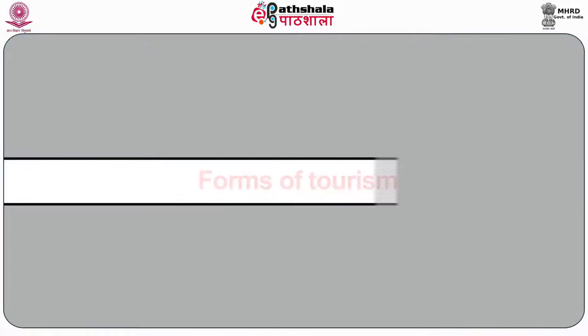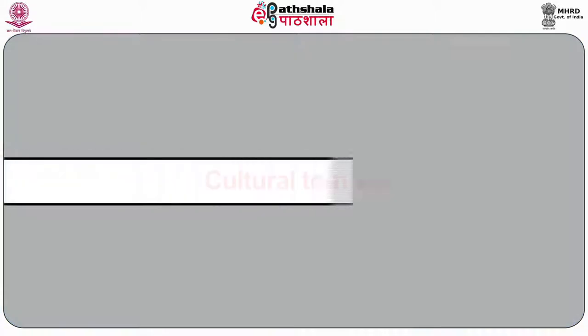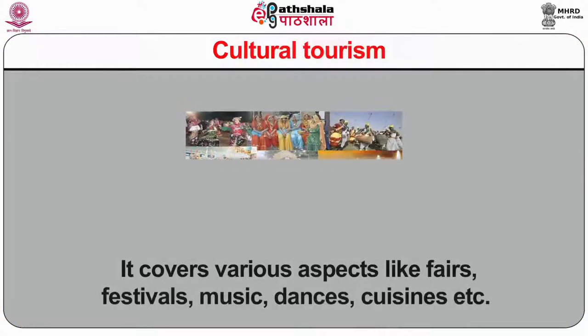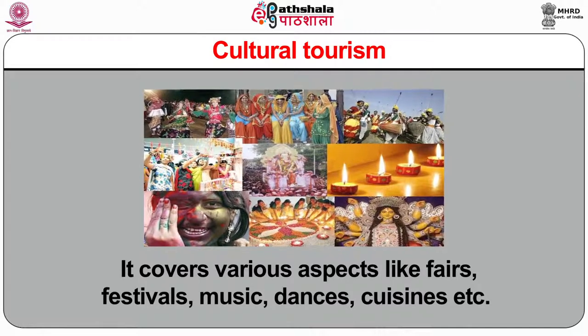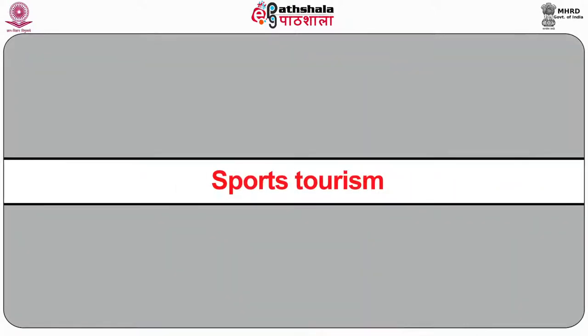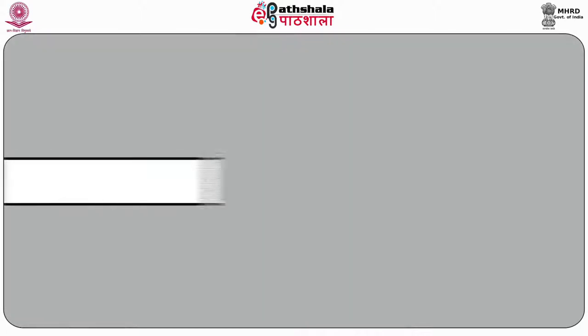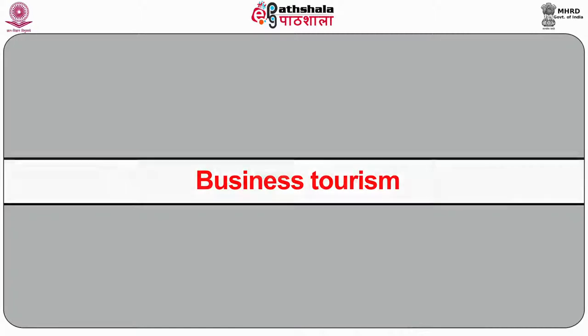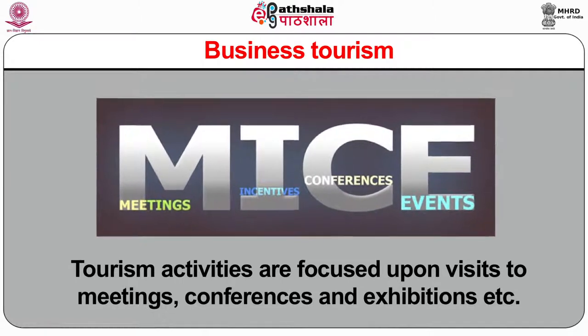Now let's have a look at the forms of tourism. There are various forms of tourism, a few of which have been enumerated as follows. The first is Cultural tourism — it covers various aspects like fairs, festivals, music, dances, cuisines, etc. Sports tourism — it is entirely focused upon sports events. Business tourism — tourism activities focused upon visits to meetings, conferences, and exhibitions, etc.